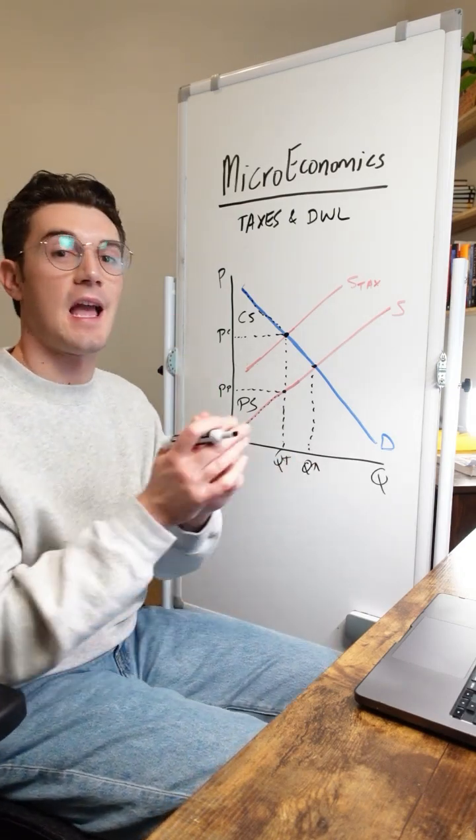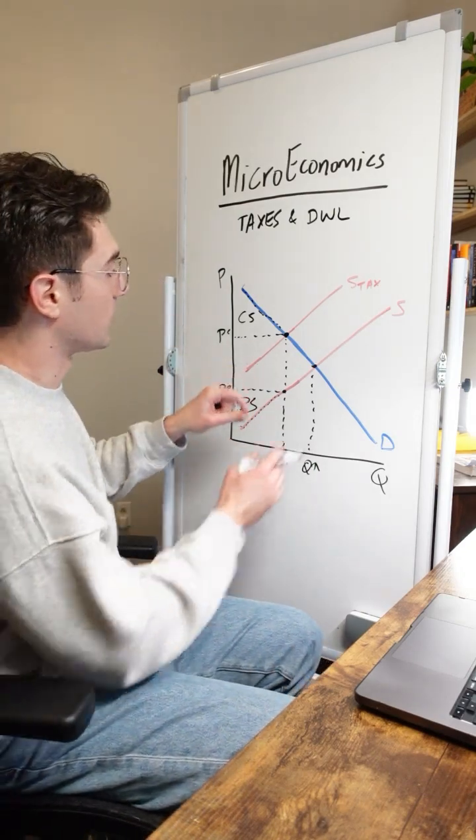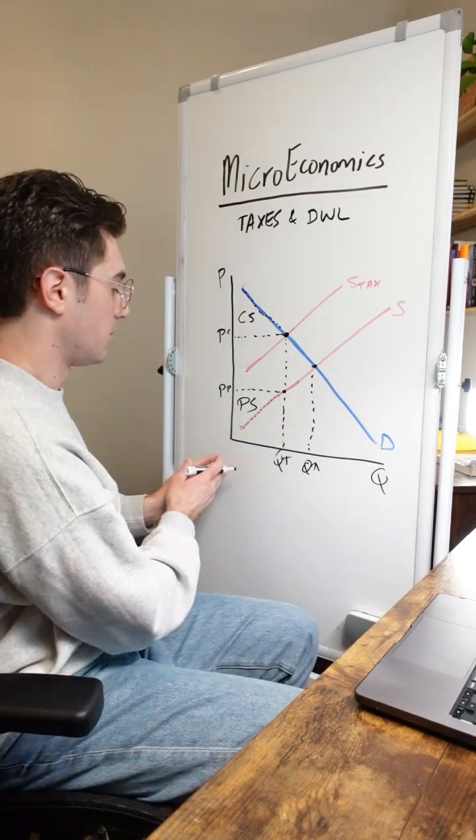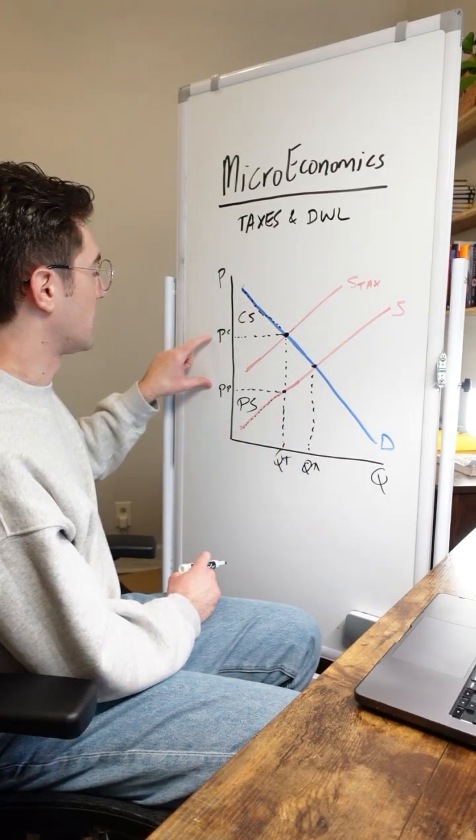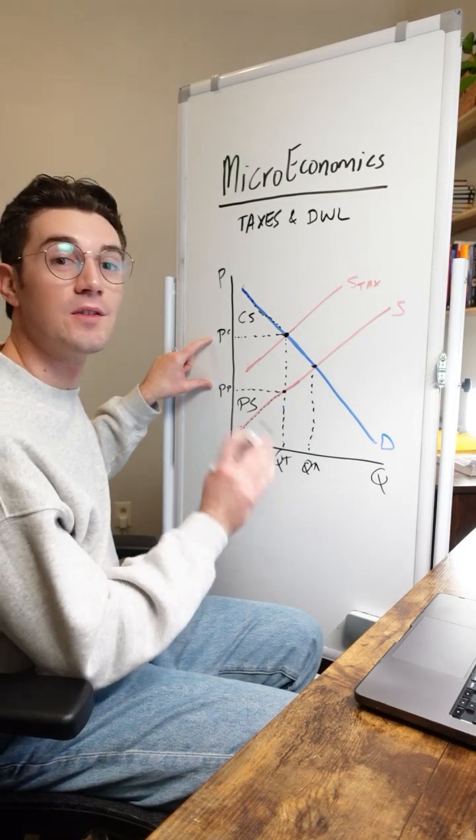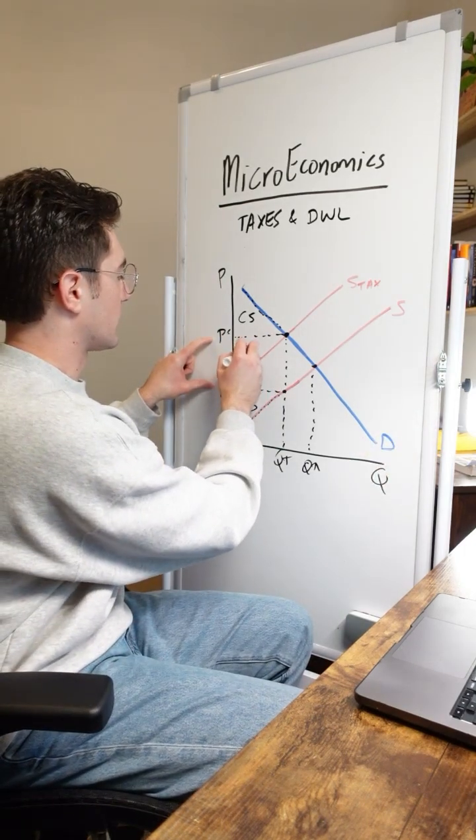Now remember, a tax is getting added to this market right here. It's the vertical distance between these supply curves, meaning that for each of these units sold up to this new quantity with the tax, we're generating this amount of tax revenue per unit towards the government. So this rectangle right here is going to be tax revenue.